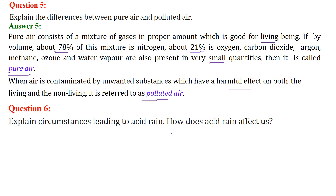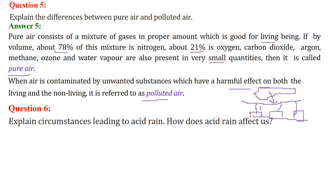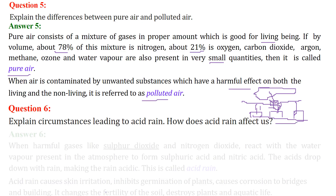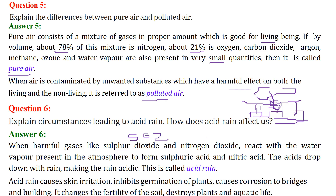Explain the circumstances leading to acid rain and how it affects us. Chimneys from industries and the burning of leaves and garbage produce harmful gases that rise and form a blanket above. When it rains, water vapor combines with these gases and comes back to us. When harmful gases like SO2 (sulfur dioxide) and nitrogen dioxide react with water vapor in the atmosphere, they form sulfuric acid and nitric acid. These acid drops fall with rain making the rain acidic — this is known as acid rain.